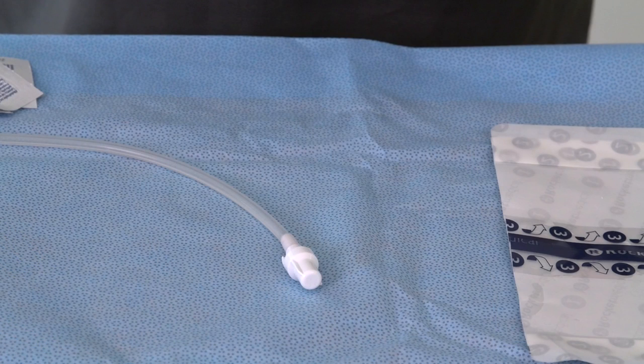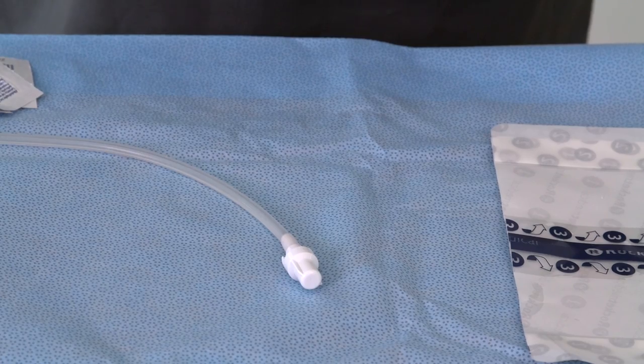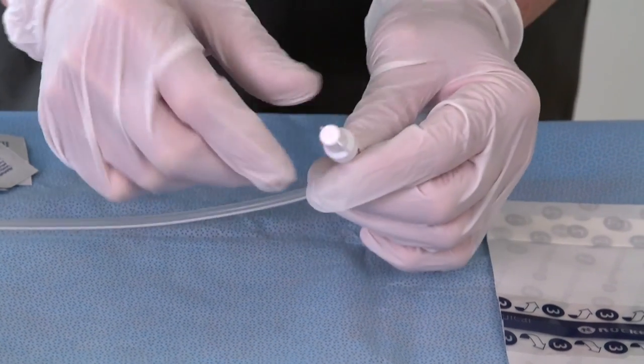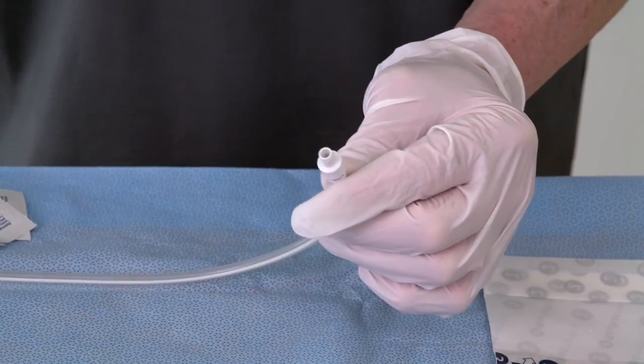Now it's time to connect the ROCKET IPC drainage system to the patient's catheter. Remove the catheter cap by rotating the cap counter-clockwise and gently pulling. Then discard the cap.